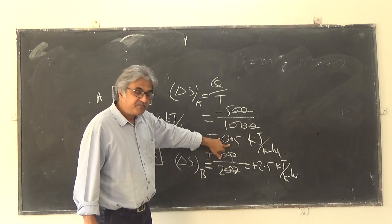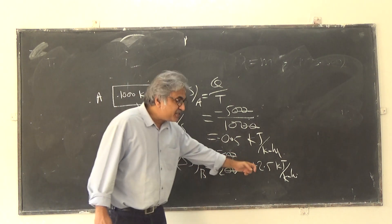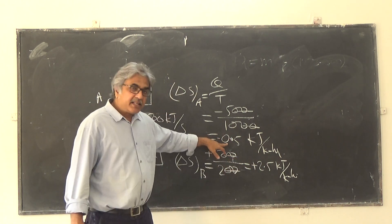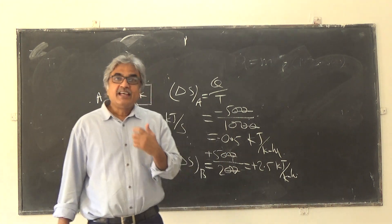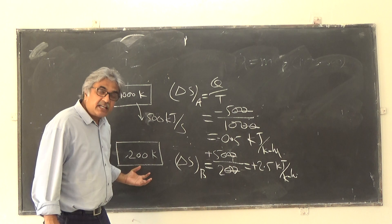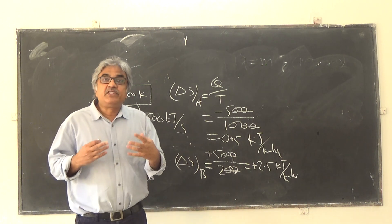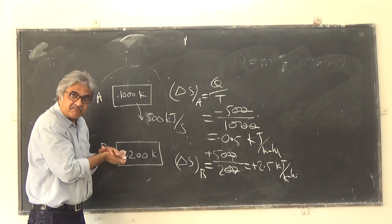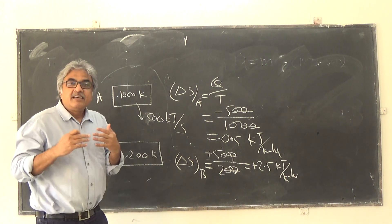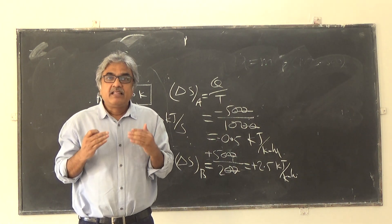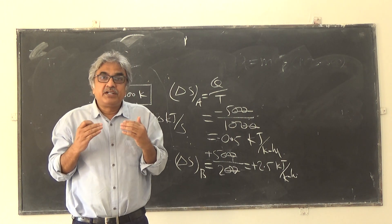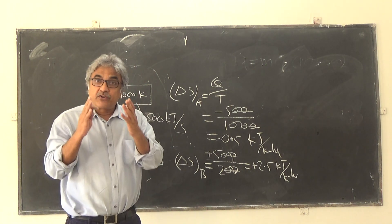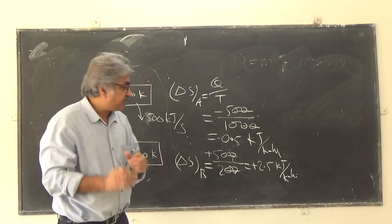Now see, if you check net change in entropy: entropy change of this body is -0.5, entropy change of this body is +2.5. So if you add them algebraically, 2.5 minus 0.5 is plus 2. So what has happened? Because of this irreversible heat transfer, there is entropy generation. If you consider this as an isolated system, both these bodies together, then in this system there is, because of this heat transfer which is irreversible, there is plus 2, that means two units of entropy generation.